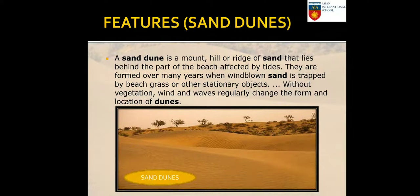A sand dune is a mound, hill, or ridge of sand that lies behind the part of the beach affected by tides. Sand dunes are formed over many years when wind-blown sand is trapped by beach grass or other stationary objects. Without vegetation, wind and waves regularly change the form and location of sand dunes. In the picture you can see the beautiful sand dunes of the Thar Desert.